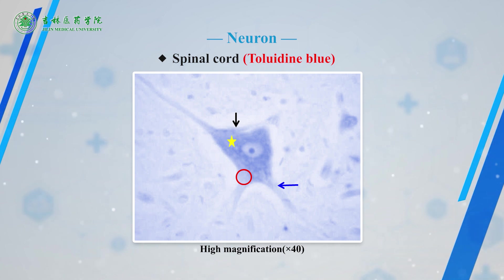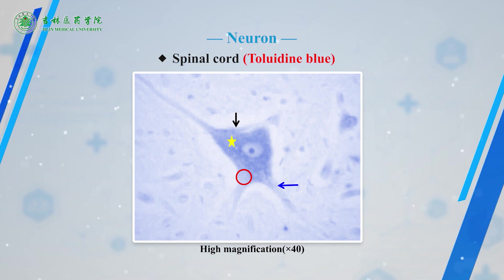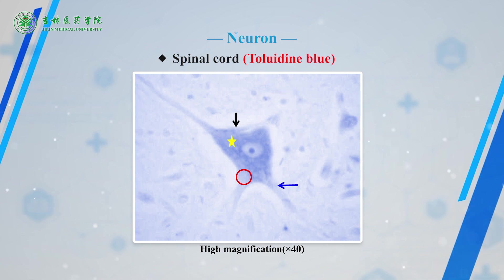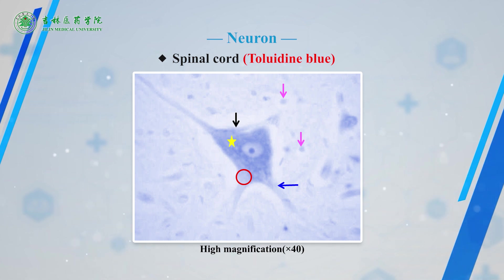The largest spherical or oval nuclei with dispersed chromatin are nuclei of oligodendrocytes. The pink arrow indicates the smallest elongated or elliptic nuclei that are most deeply stained, which are nuclei of microglia cells.